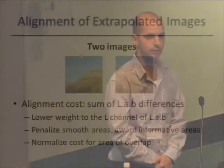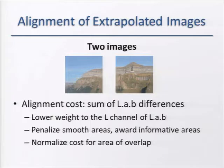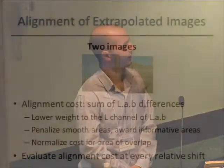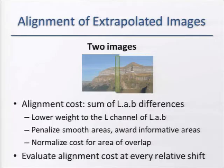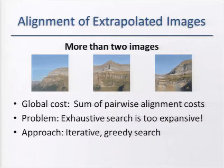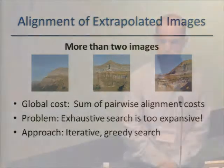We begin with the simple case of two images. We define the alignment cost as the sum of LAB differences in the overlap area, with three minor changes: we give lower weight to the L channel to account for illumination changes, we penalize smooth areas to maintain the general structure of the scene, and we normalize the cost by the area of the overlap to prevent preference for small overlaps. Once we have this cost, we evaluate it at every relative shift and choose the shift that minimizes it.